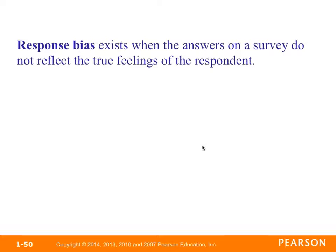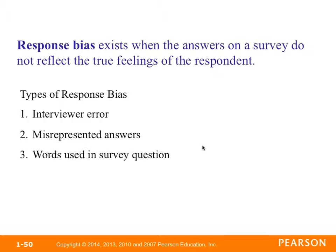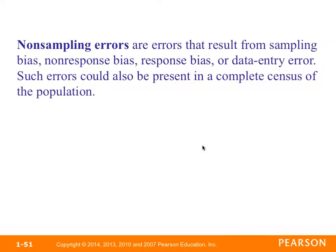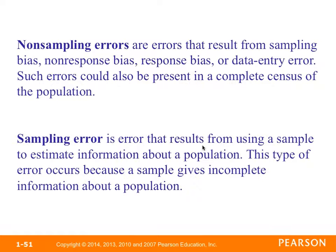Response bias exists when the answers on a survey do not reflect the true feelings of the respondent. Types of response bias include interviewer error, misrepresented answers, the wording of survey questions — where a question is worded in a way that might influence the response — and the ordering of questions or words within a question. Non-sampling errors result from sampling bias, non-response bias, response bias, or data entry error, and could also be present in a complete census. Sampling errors result from using a sample to estimate information about a population and occur because a sample gives incomplete information.